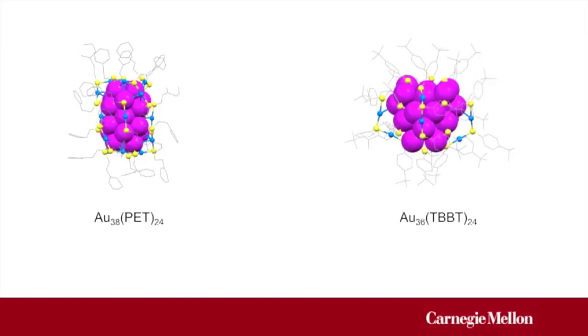For example, we have transformed a nanocluster with 38 gold atoms into a 36 gold atom nanocluster by changing the surface thiolate from a linear alkane thiolate into a bulky aromatic thiolate. At the same time, the structure is changed from a bi-icosahedron into a truncated tetrahedron.